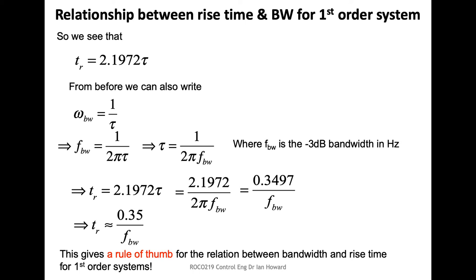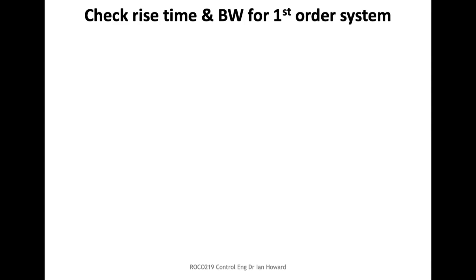Most of this is well known, but the reason for working through these simple relations is to have a feeling for whether you've got roughly the right values from your calculations. It's a useful reality check — especially when you've done lots of MATLAB analysis and get a value out but want to verify it relates to what you expect. These rules of thumb are useful for checking rise time and bandwidth.